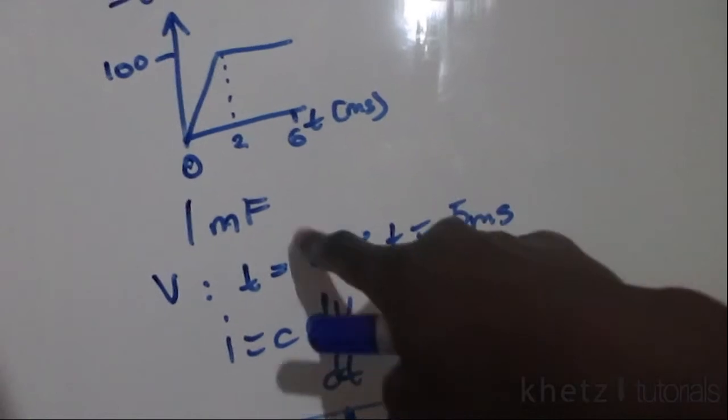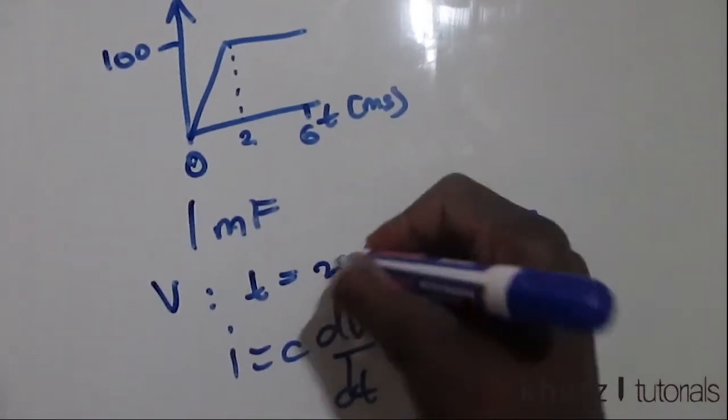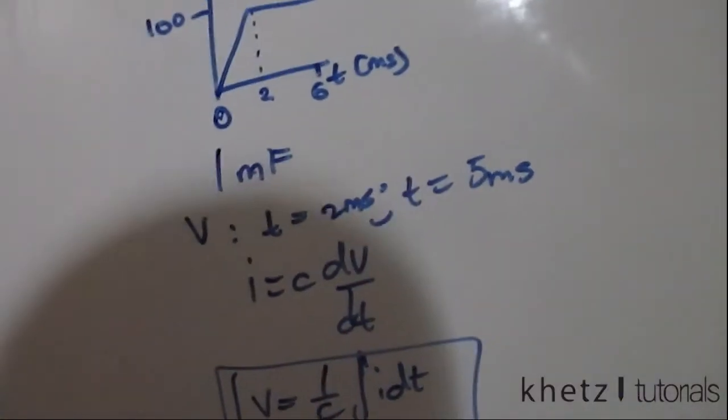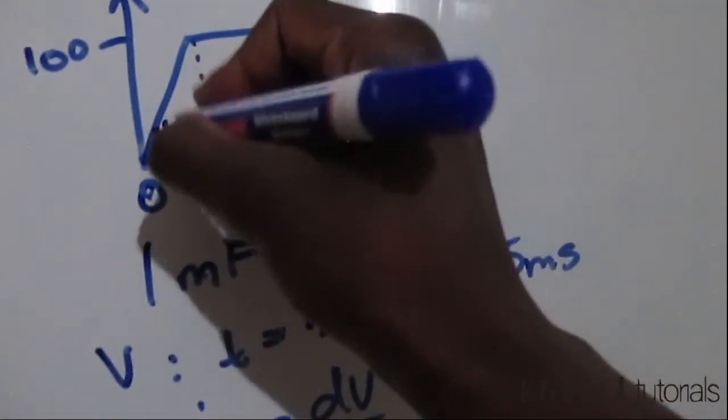Now we are asked to find the voltage at time t equals two milliseconds, and that is this part.